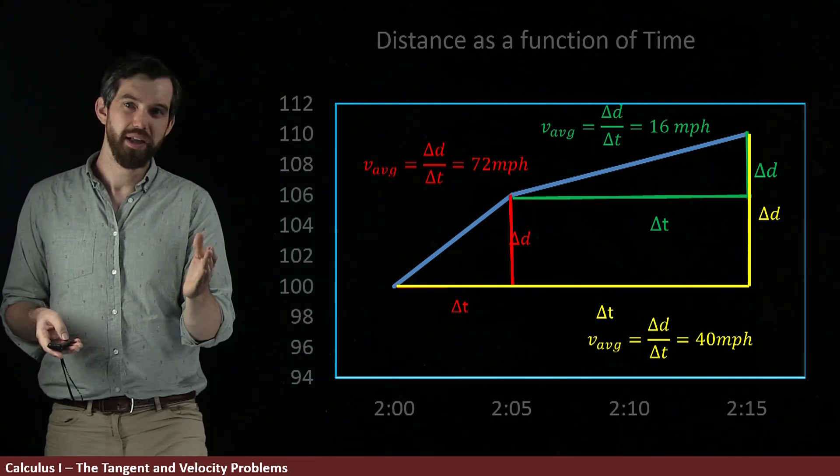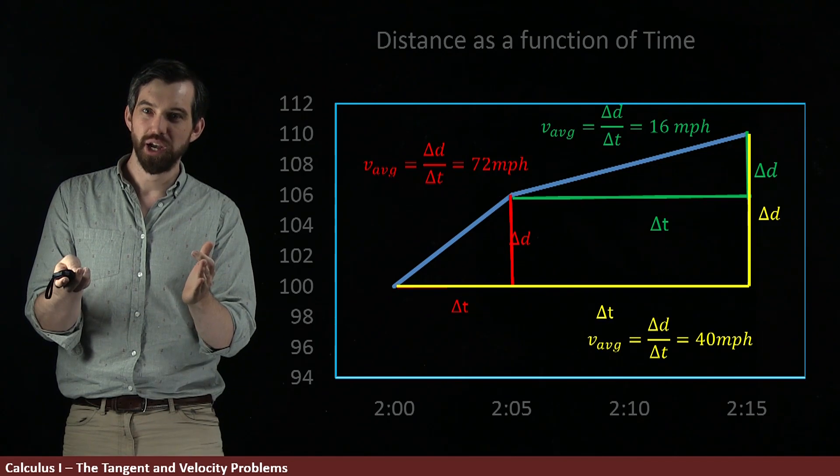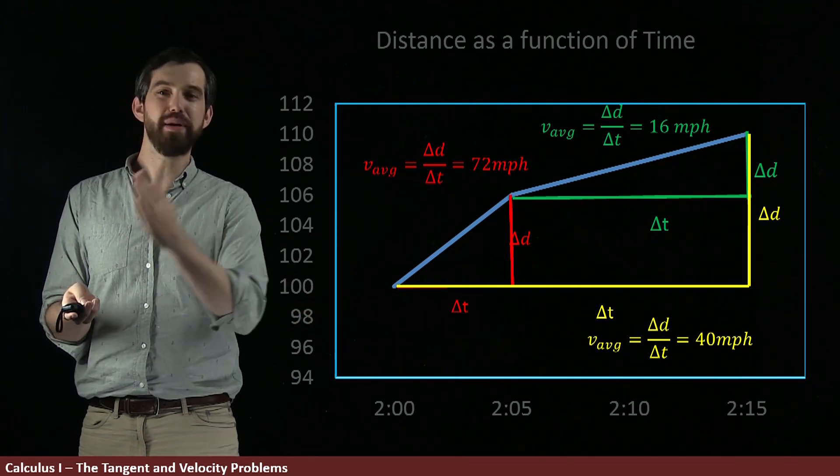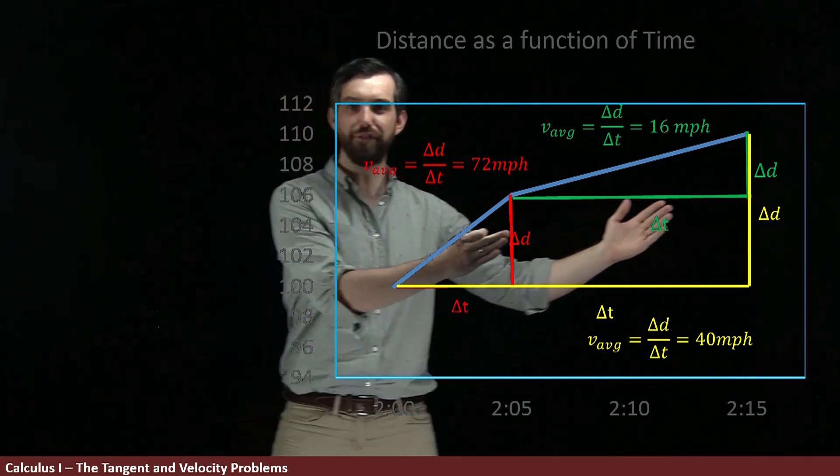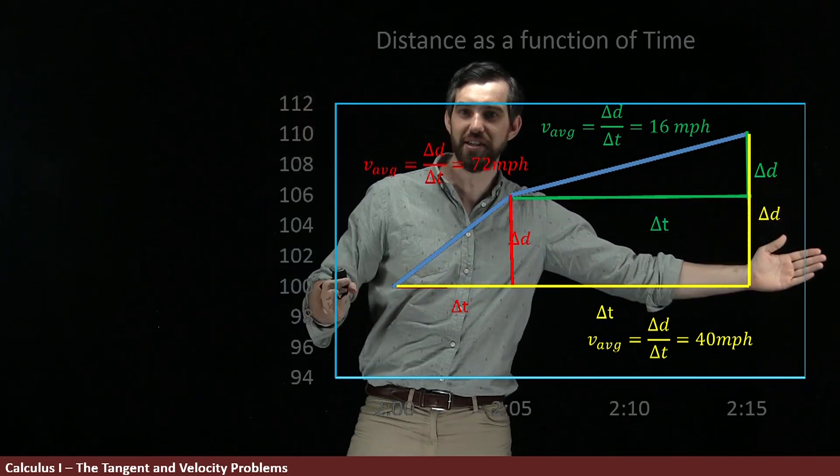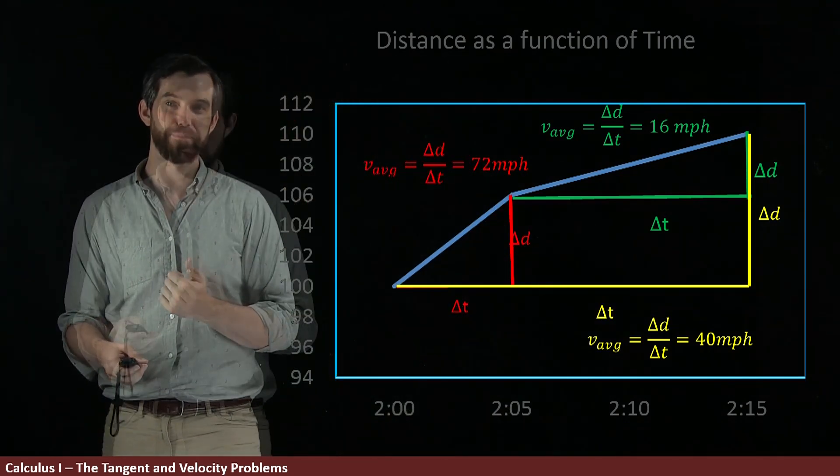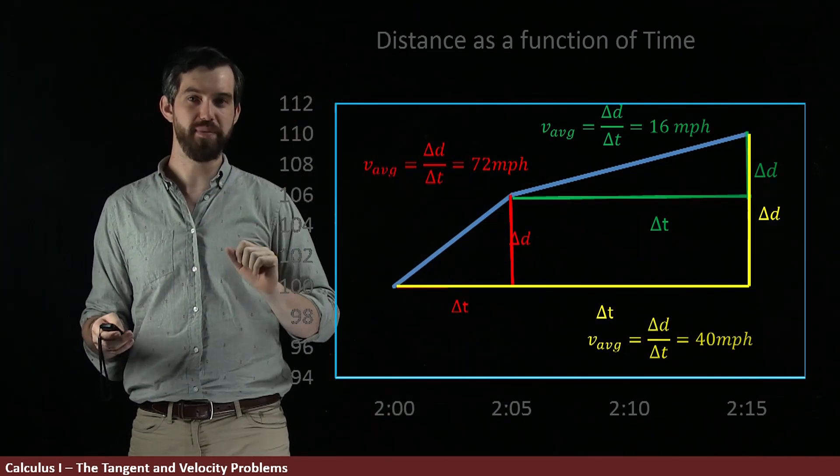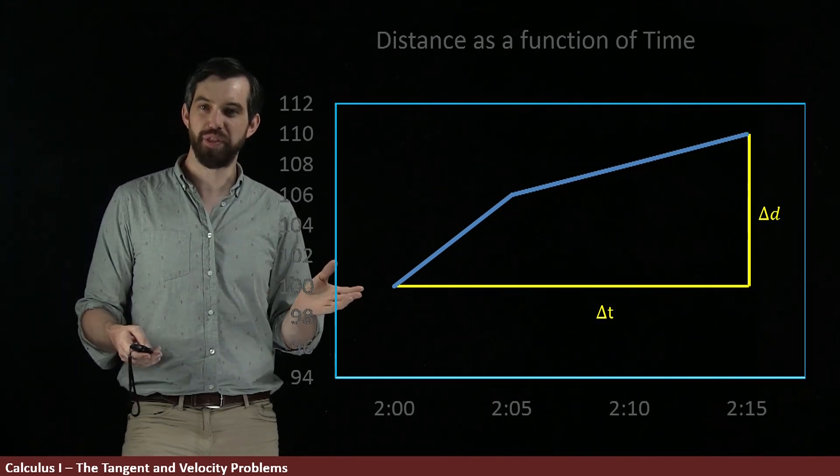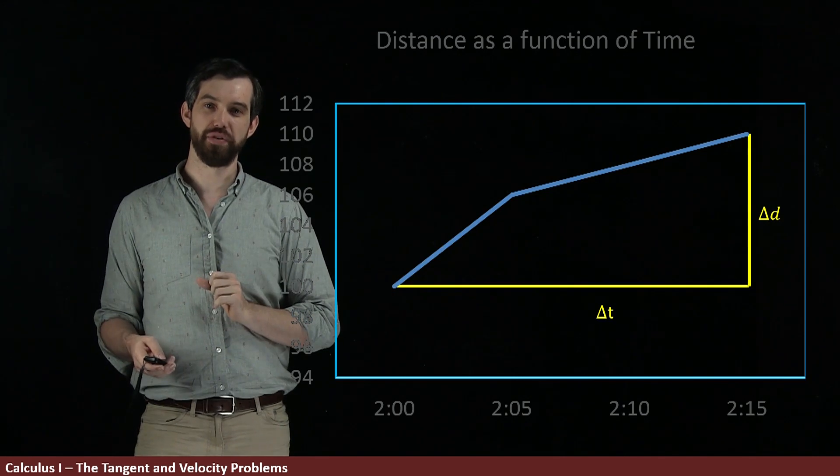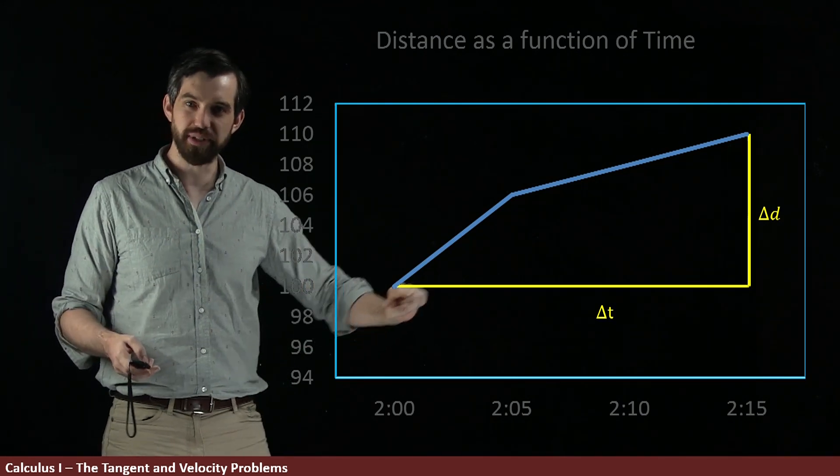So here's the point. When I talk about an average velocity, it really, really matters where I'm talking about. What's my starting point? What's my finishing point? If I use this starting and finishing point, it's very different than if I use this starting and finishing point, and very different than if I use the entire thing. You get these different results for average velocities. Now, let's get rid of a bunch of the mess here. And what I want to focus on is that if I just keep the larger delta D over delta T, I could imagine that there was a line that was connecting these points.